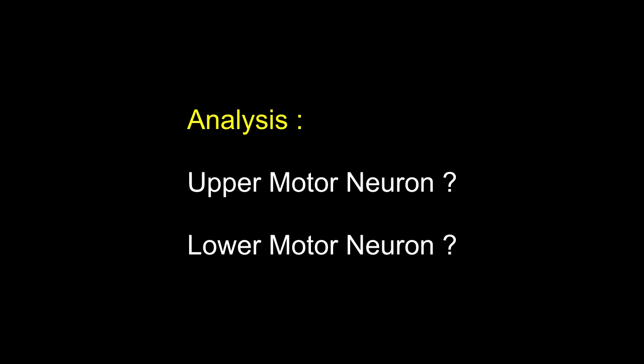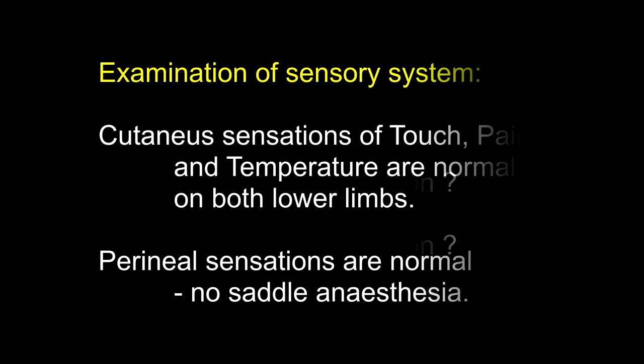What would the picture be in a fully developed upper motor neuron type of lesion at the same level? There will be hypertonia of the lower limb muscles with clasp-knife type of rigidity, the deep reflexes — knee jerk and ankle jerk — will be exaggerated with clonus, and the plantars will be extensors.